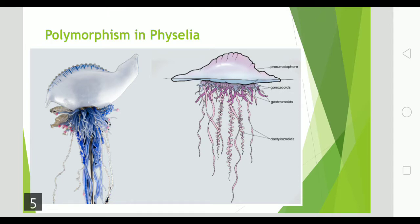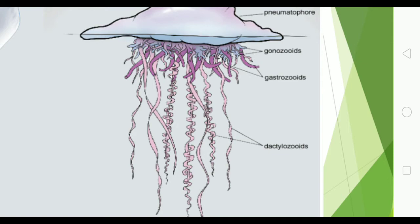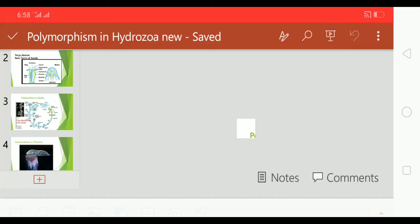The gonozoid functions for reproduction. Gastrozoids are present, which are elongated and tubular, performing the reproductive function. Then there are dactylozoids, which are elongated and freely hanging into the water. They function like tentacles and are tactile in function. They also have nematocysts — that is, stinging cells. This is the distinctive character in Physalia.